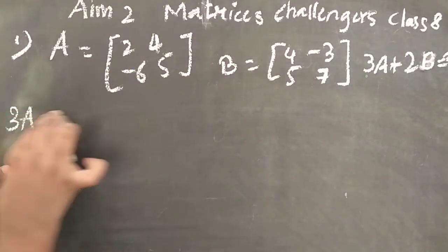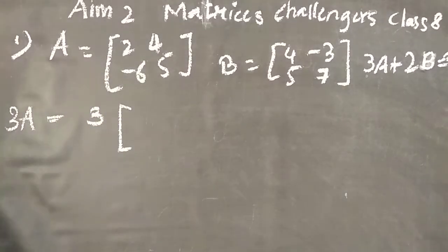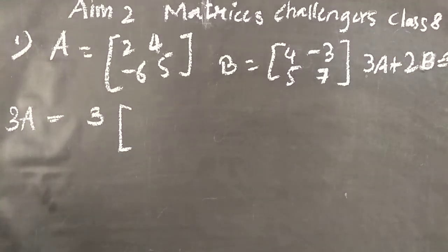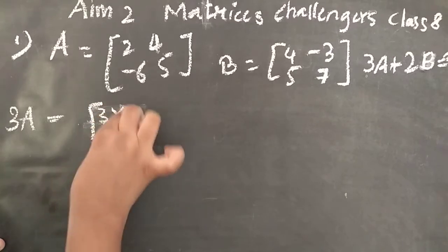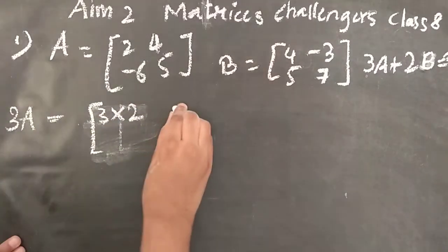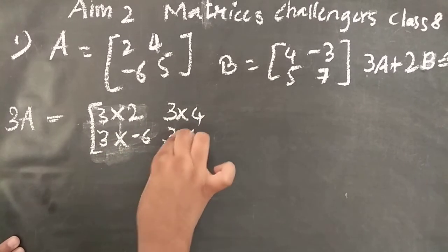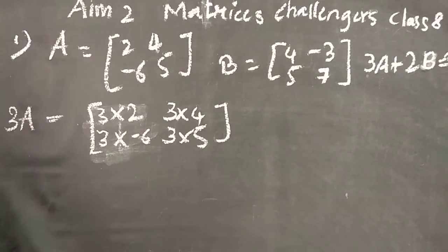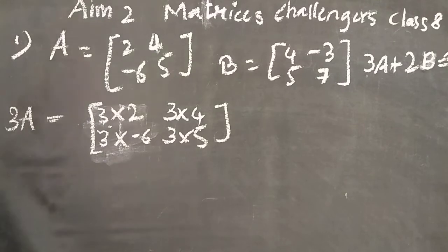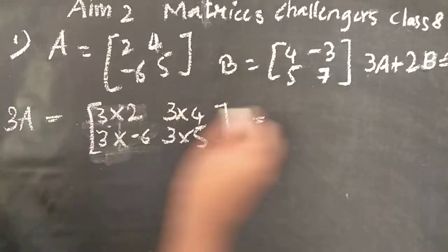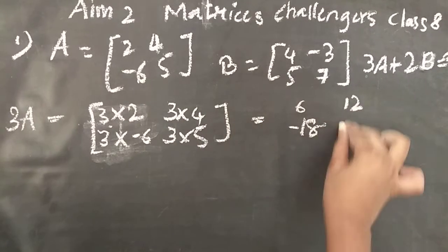Now 3A equals 3 into each element directly: 3 into 2, 3 into 4, 3 into minus 6, and 3 into 5. If you have a scalar 3, you multiply every term by 3. That gives us 6, 12, minus 18, and 15.